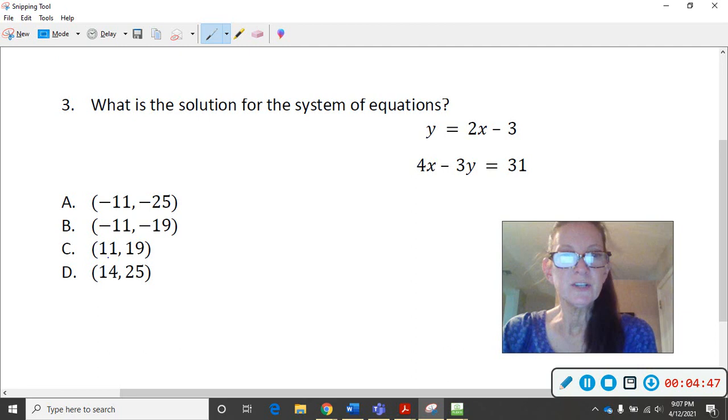So let's just take (11, 19). You're going to say the 19 is the y. So 19 equals 2 times 11 minus 3. You got to figure out if that's yes or no. Let's go back to 11 and 19 again. Right here it's going to be 4 times 11 minus whatever 3 times 19 is.